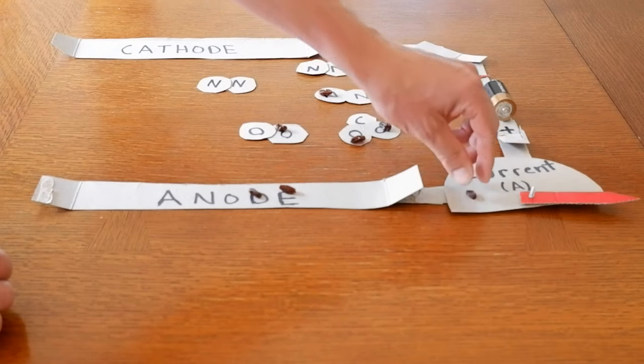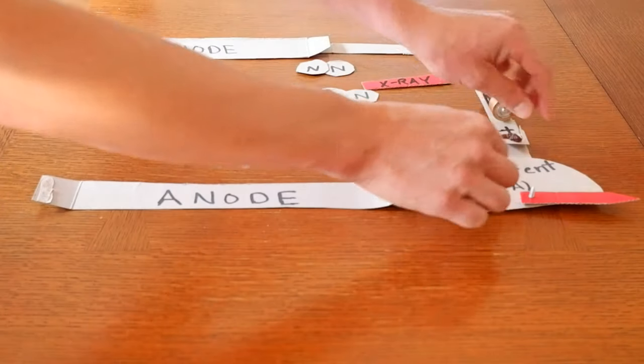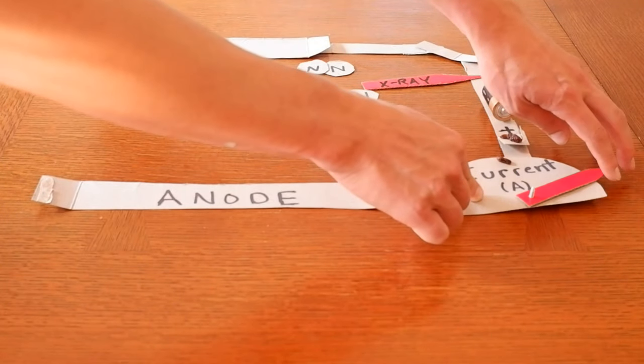They want to go to the positive, they're going to pass through this current meter, and we're going to go from a zero current to a non-zero current.